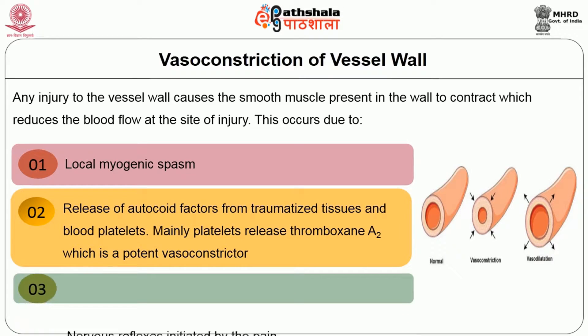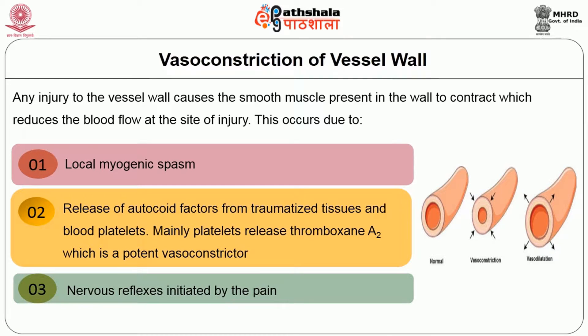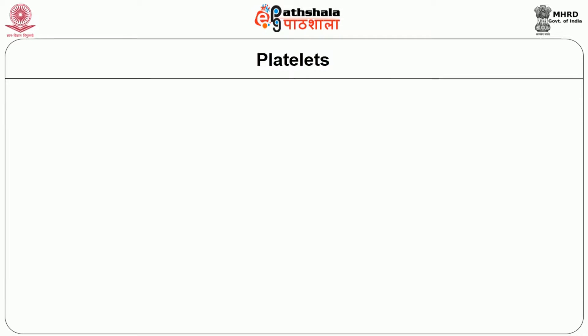The third mechanism producing vasoconstriction is nervous reflexes. Whenever there is injury to the vessel wall, the nerves are damaged, which causes pain in that area. This pain in turn produces reflex mechanisms that produce vasoconstriction of the vessel wall. Before going into the next mechanism — platelet plug formation — I will tell you what platelets are.